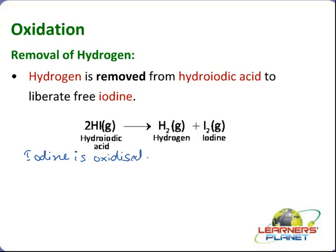Let's take one more example: hydrogen peroxide. The formula of hydrogen peroxide is H2O2. It is a very strong oxidizing agent — it cleaves and forms H2O plus nascent oxygen. A single atom of oxygen is highly unstable, so it is a very strong oxidizing agent. This nascent oxygen adds up to other compounds.